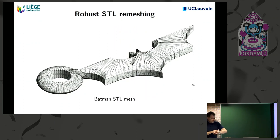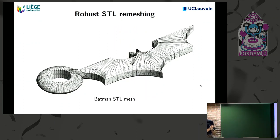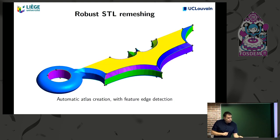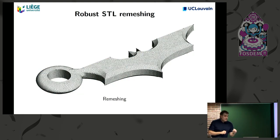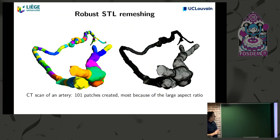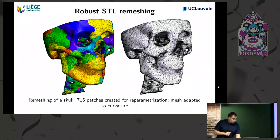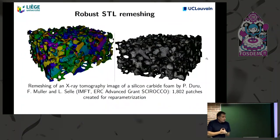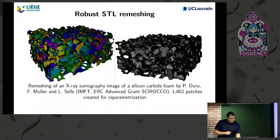The last recent feature is remeshing of STL files. If you have an STL, we compute the reparametrization to apply our existing algorithms to these discrete geometries. So images from medical imaging devices can be remeshed directly. The same algorithms apply to very large cases such as X-ray tomography images.